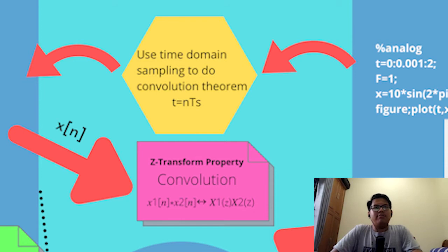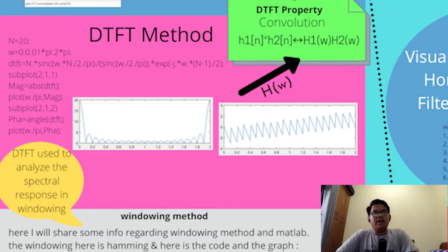Another method that closely links up with convolution theorem is sampling method, where convolution usually uses time domain sampling method to work. On the other hand, DTFT is mainly used to analyze the spectral response in windowing.